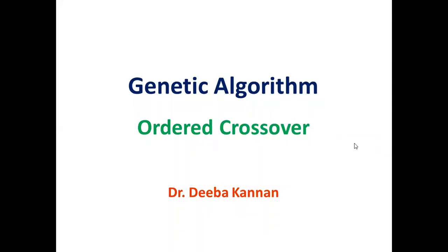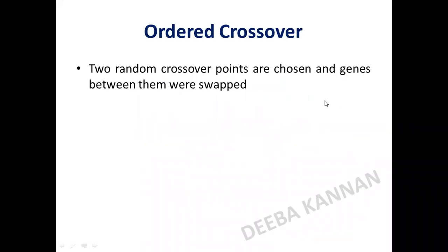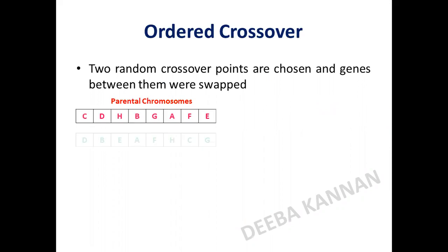In this video we are going to discuss about ordered crossover. This is one of the crossovers used for permutation encoded chromosomes. It is similar to partially mapped crossover and cyclic crossover — these three are the crossovers used when the chromosome is specifically permutation encoded. Now we'll see the working of this ordered crossover.